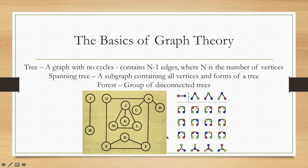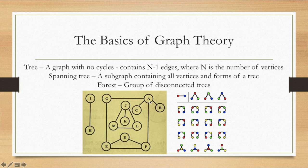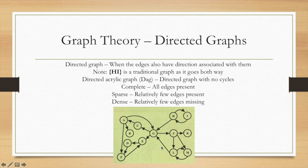Then there are important things called directed graphs. A directed graph is very similar to what we were looking at before but this is when the edges also have direction associated. Before you could traverse either a to f or f to a whereas over here you can only go from c to a. You can't go from a to c. You'd have to go a g c. The h i is a traditional graph because it goes both ways. A DAG or directed acyclic graph is a directed graph with no cycles. A complete graph means all edges are present. A sparse graph means relatively few edges present and a dense graph is when there are relatively few edges missing.